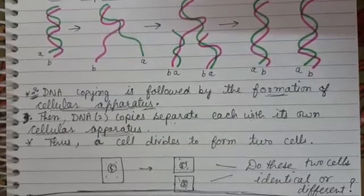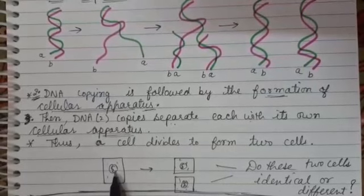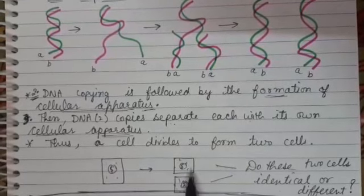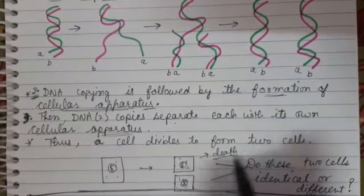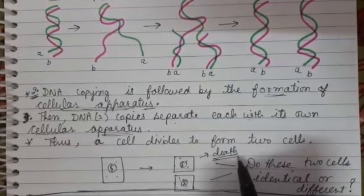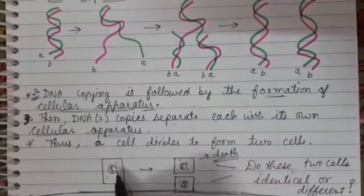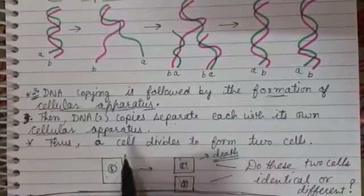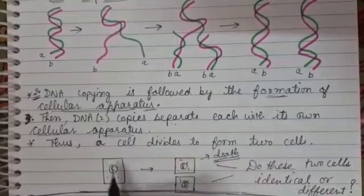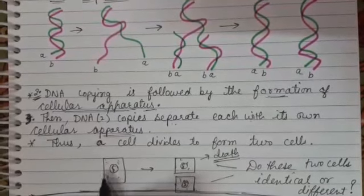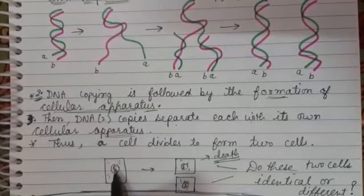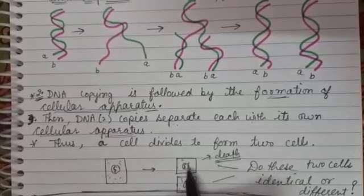Some of these variations might be so drastic that the new DNA will not work with the cell. The inaccuracies or variations in DNA are so drastic that these cellular apparatus or cell organelles do not work with this changed DNA, and the cell dies.